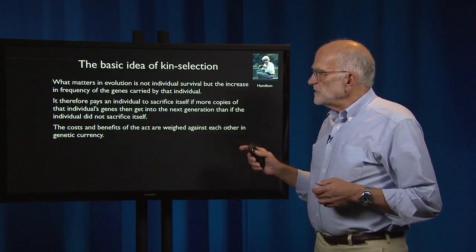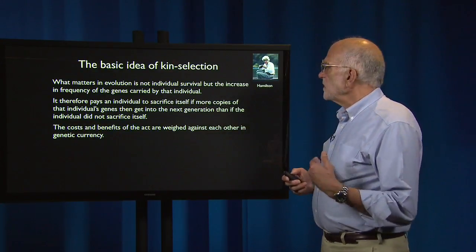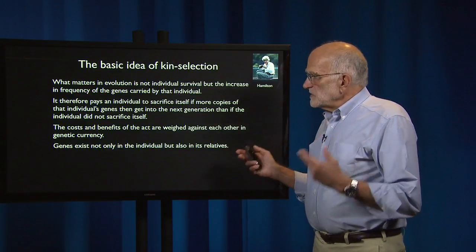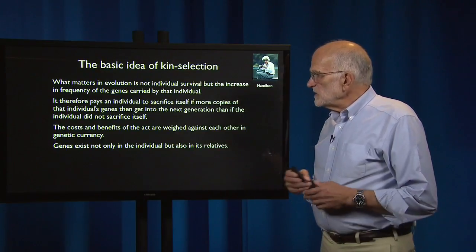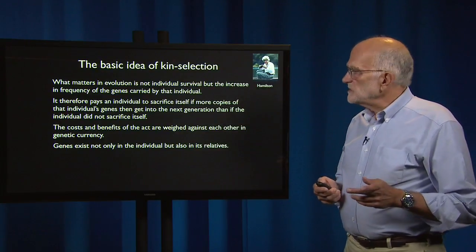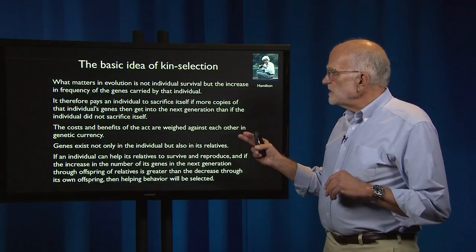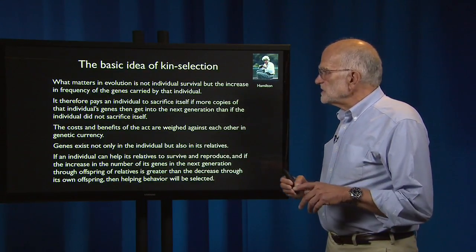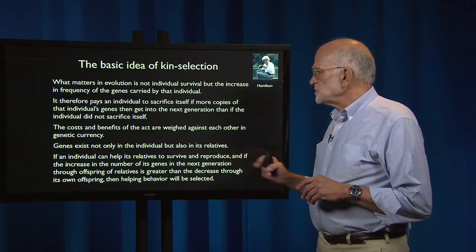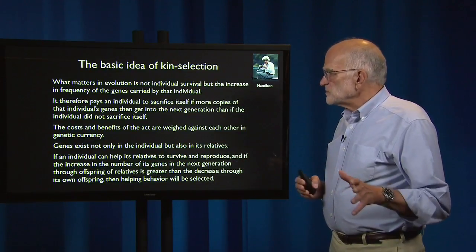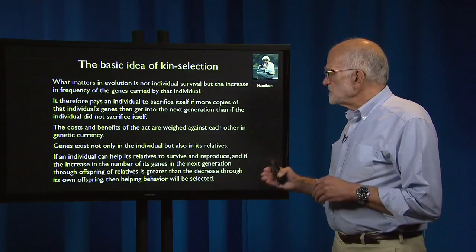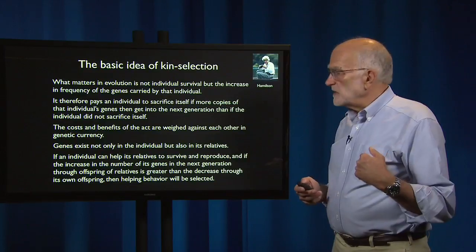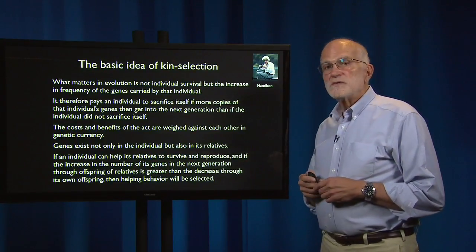The costs and benefits of acts are weighed against each other in genetic currency, and genes exist not only in the individual but also in its relatives. Therefore, if an individual can help its relatives to survive and reproduce, and if the increase in the number of its genes in the next generation through offspring of relatives is greater than the decrease through its own offspring as a consequence of that act, then helping behavior will be selected.